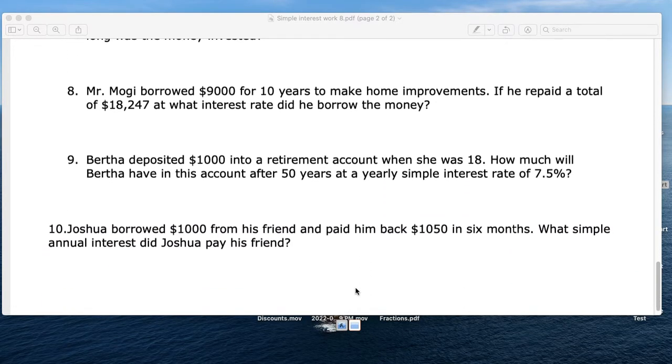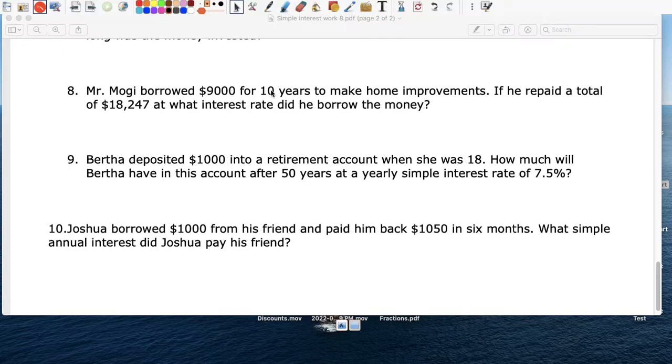Number 8. I equals PRT. The principal is 9,000. What interest rate? So R is my variable, my unknown. T is 10 years. And how much did he make? Well, after 10 years, his bank account had, actually, he paid a total of $18,247.